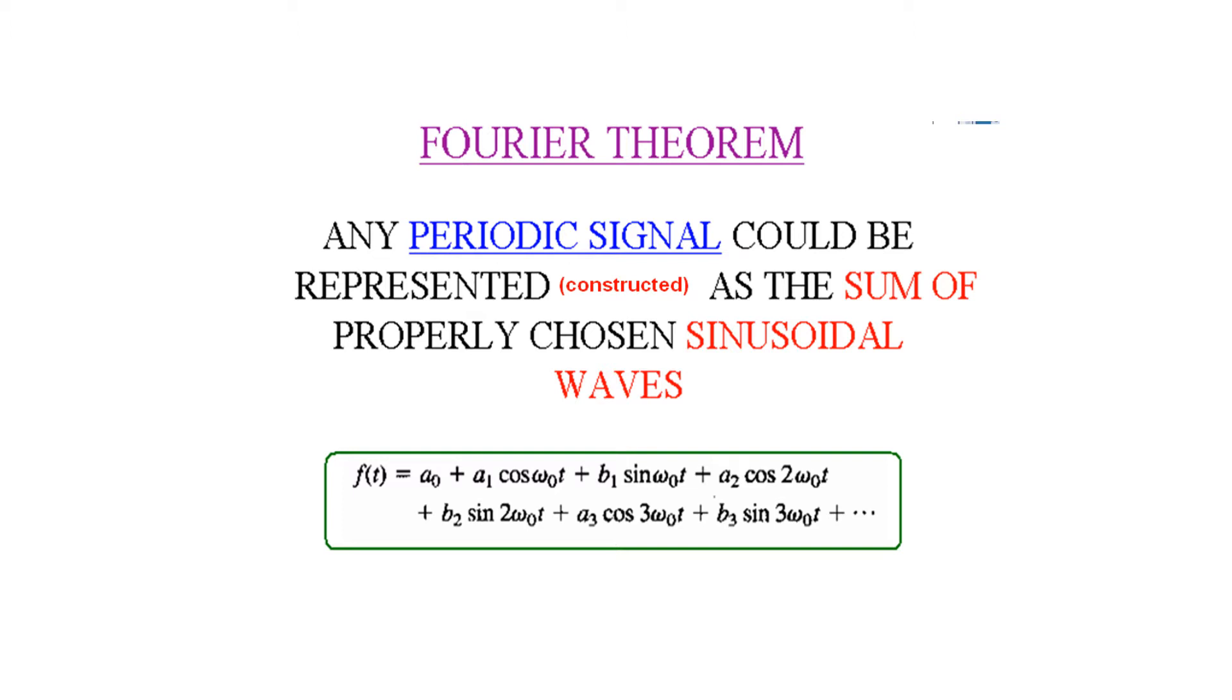What does this mean? That any signal, let's say this is a square wave signal or triangular wave signal, periodic, can be constructed with the combination of sine and cosine waves of different frequencies. Now this is fundamental frequency. This is two means the second harmonics, three means the third harmonics, etc.